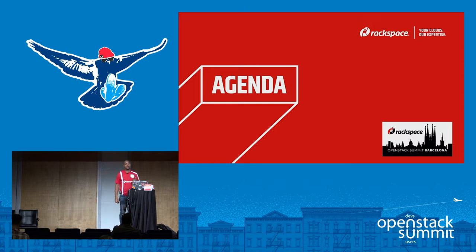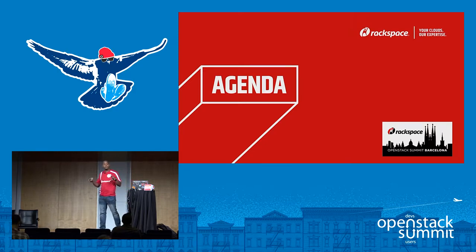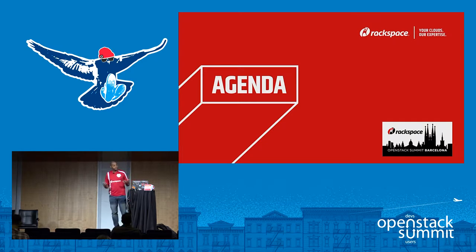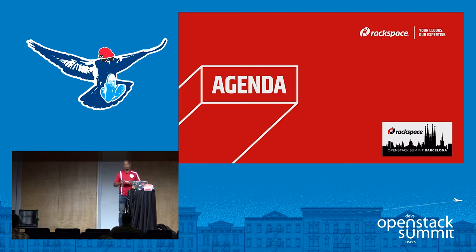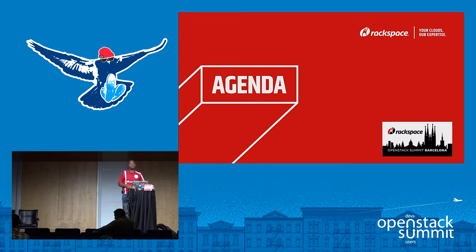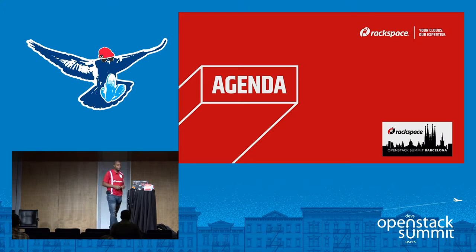The agenda for today: first, talking about the concept of active-active cloud regions and making sure we all have a level playing field. Then we'll go through tips and tricks around how you execute that — it's not exactly the easiest thing to do. I believe in having an administration region — the guy in the middle that manages all the other regions, which can be placed anywhere. Then at the end I'll show a working example: all-in-one OpenStack clouds in two different Rackspace regions, plus a separate admin cloud.